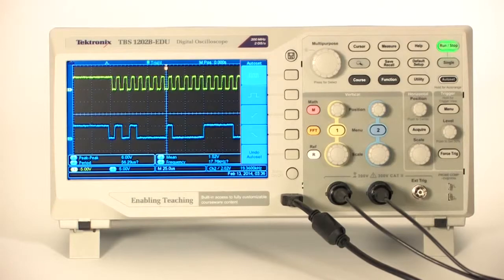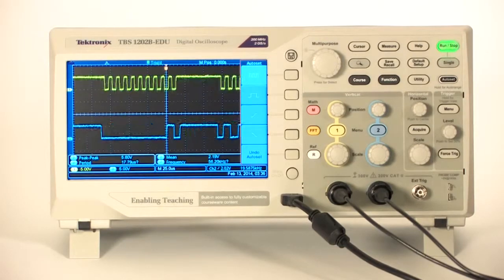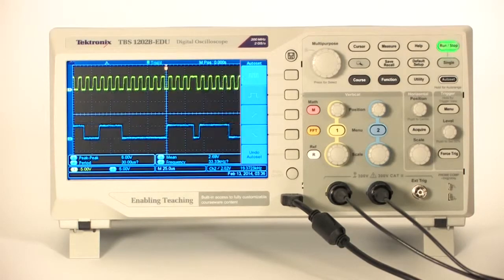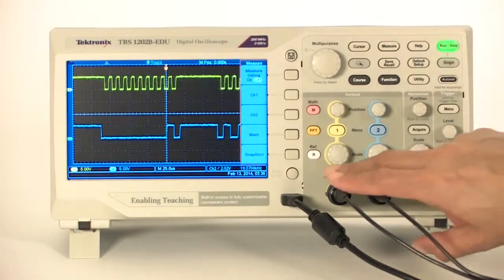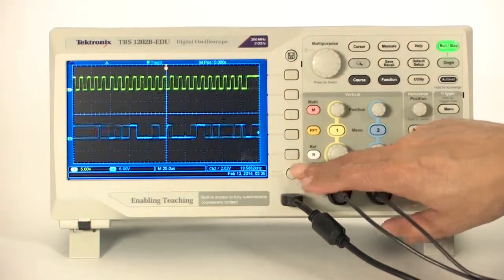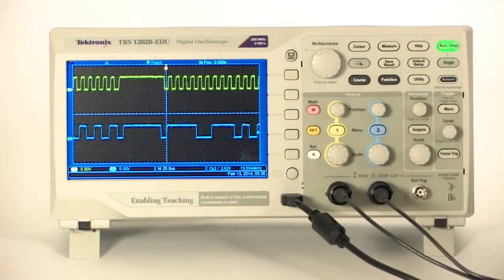Often, digital data comes in packets. Simple edge triggering won't allow you to pick out the packets. You can use pulse width triggering to capture them. Let's take a look at some I2C information.